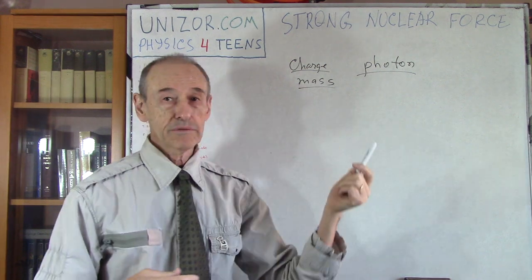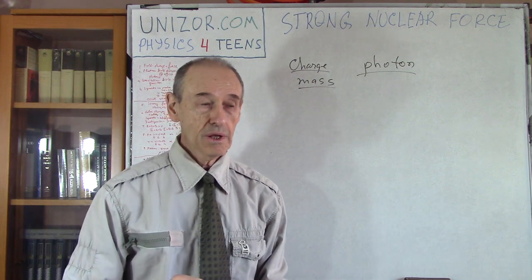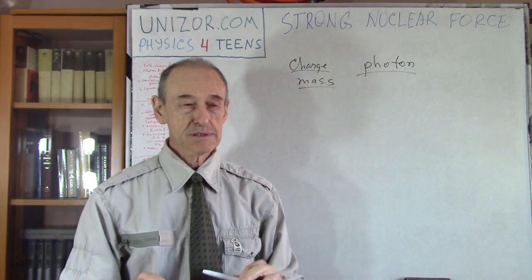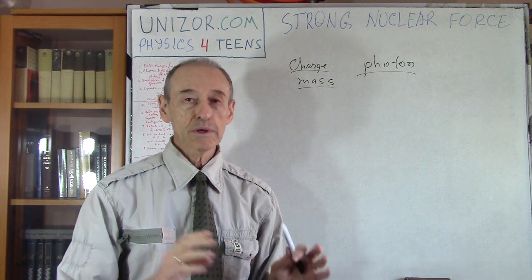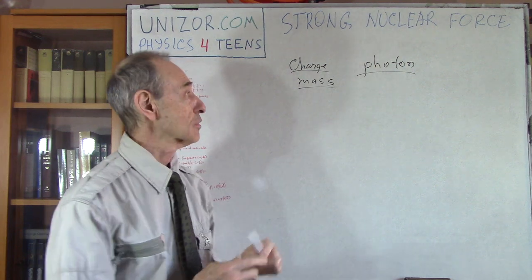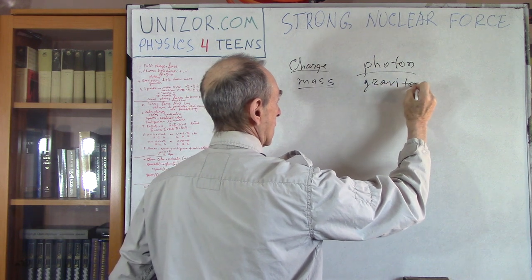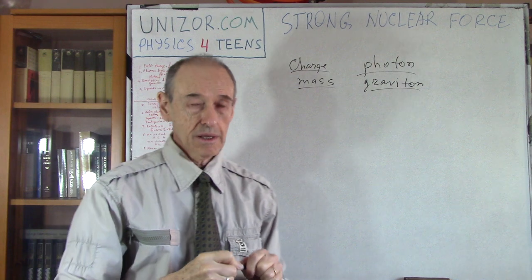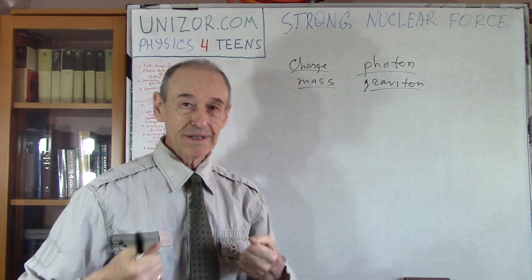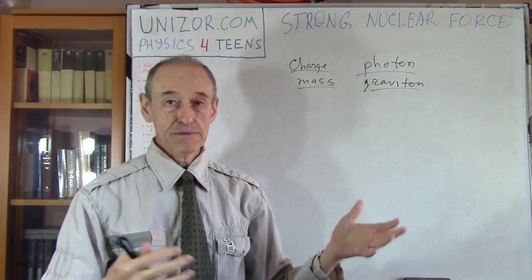Speaking about gravitational field — there is a theory that something called a graviton exists. There are some experiments suggesting they exist. As a theory, we accept that there is something called a graviton, which is a quantum of energy of the gravitational field. It basically carries this energy and manifests its existence as a force.